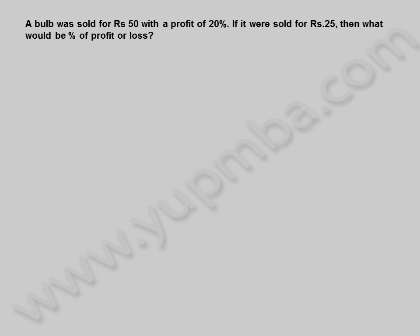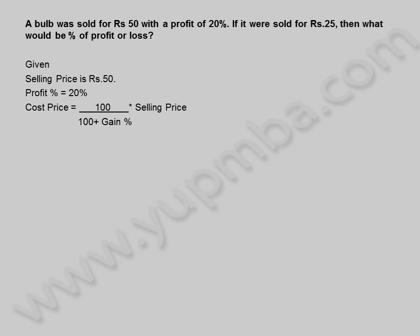A bulb was sold for 50 rupees with a profit of 20%. If it was sold for 25 rupees, then what would be the percentage of profit or loss? Given selling price is 50 rupees and profit percentage is 20%, cost price is equal to 100 divided by (100 plus gain percentage) into selling price.